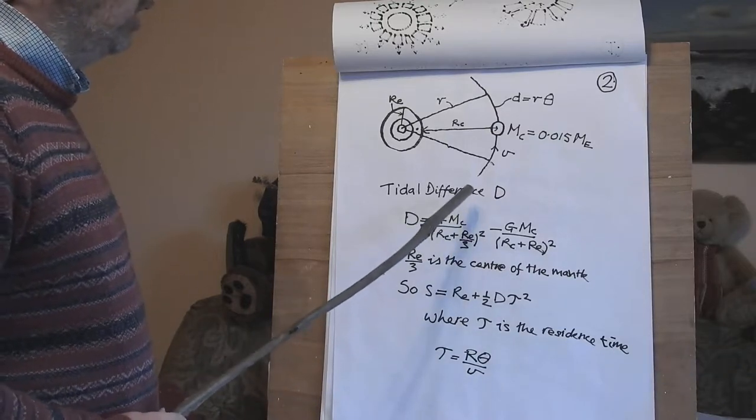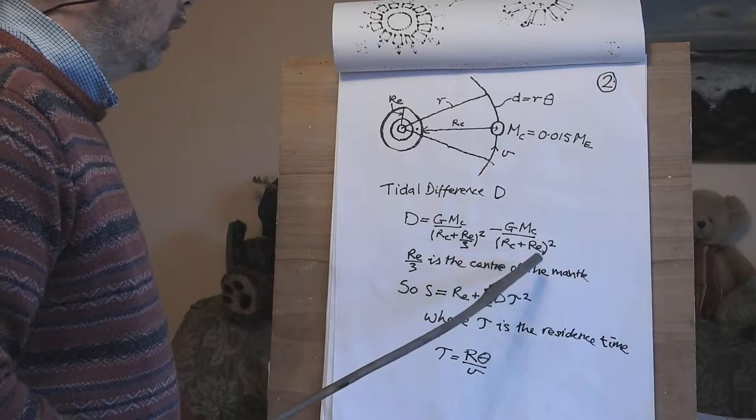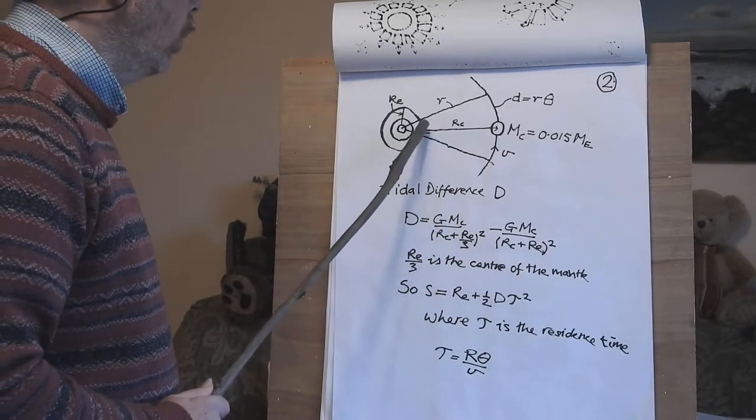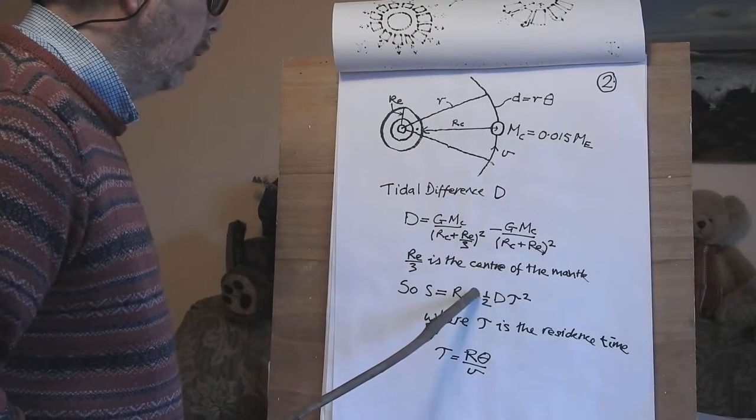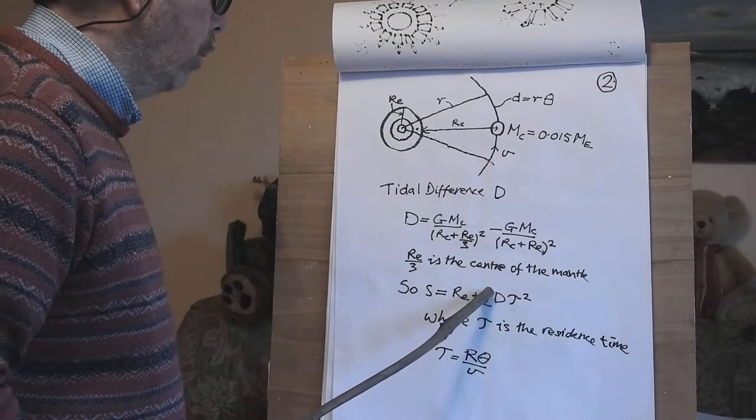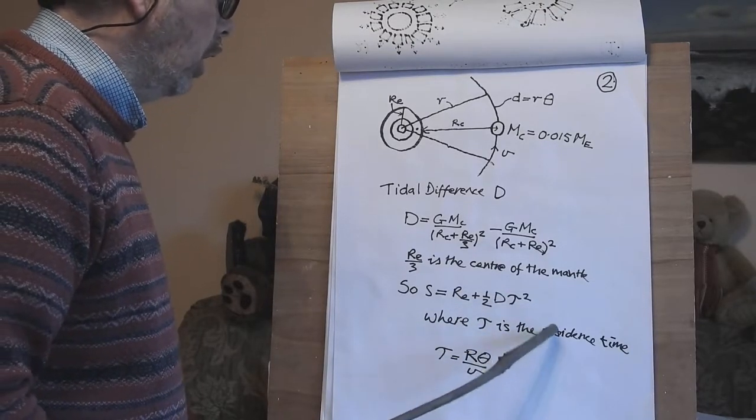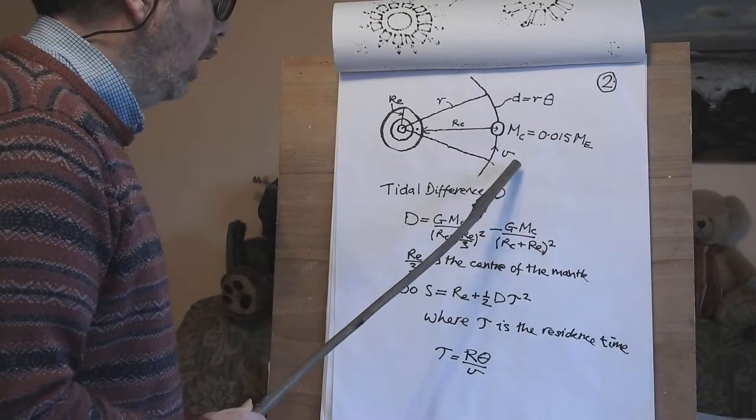So the tidal difference d is an acceleration given by this equation where Re over 3 is the centre of the mantle where this dot is. So S the displacement is equal to the radius of the Earth plus a half d tau squared where tau is the residence time. T equals R theta this distance divided by the velocity.